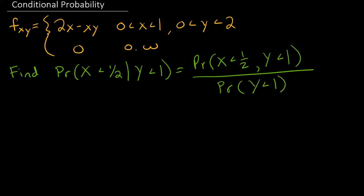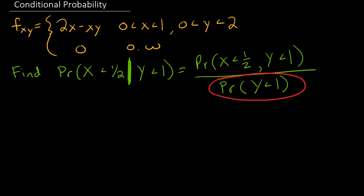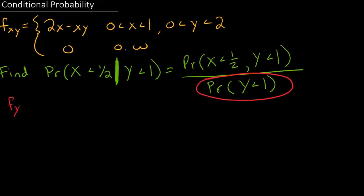If you know this definition, then finding this probability is really not that bad. Remember what is on the right-hand side of that given bar — that is what you're going to have in the denominator. So we need to find the marginal distribution for y. I'm using the subscript notation, so f_y(y) is the marginal distribution of y, and f(x, y) up top is the joint distribution.